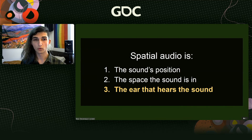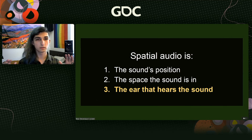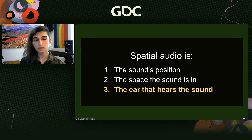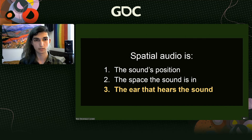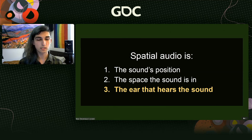Ambisonics is a technology that allows for the simulation and/or capture of the 3D sound of an environment, including height — taking that sphere of possible positions and dividing it into a number of points. But when we take all of that information, we need to turn it into something the player can listen to, because the player isn't going to have 36 speakers — they'll have two, or a 5.1 setup, or maybe Dolby Atmos.